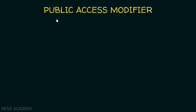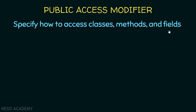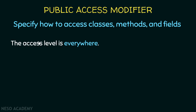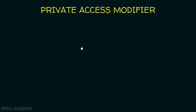Let's see the public keyword. First of all, it is an access modifier — this means that it can specify how to access classes, methods, and fields. You already know that we can use the dot operator to access fields and methods of classes and objects. We can change this functionality by using access modifiers. If we use the public keyword, the access level is everywhere — everything that is public can be accessed inside the class, outside the class, inside the package, and outside the package.